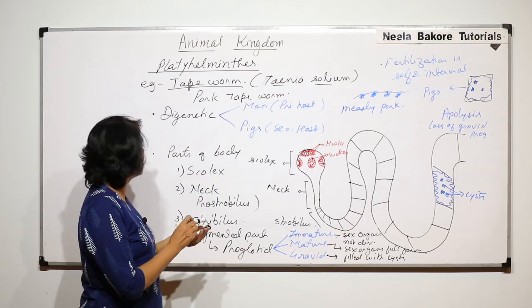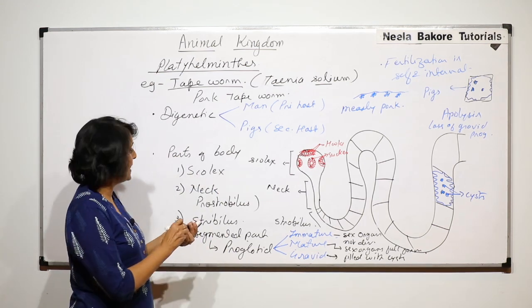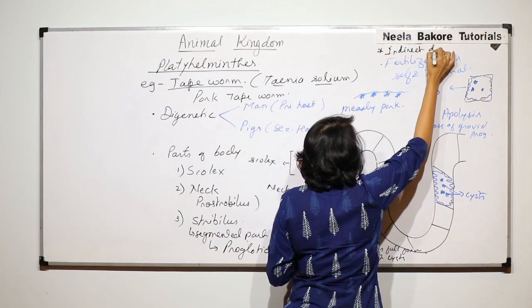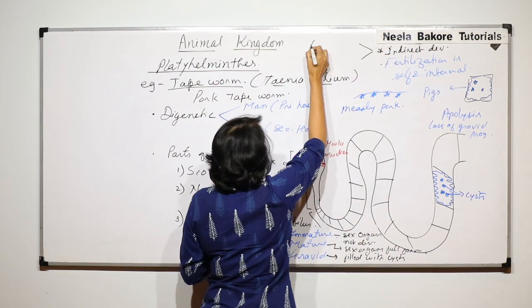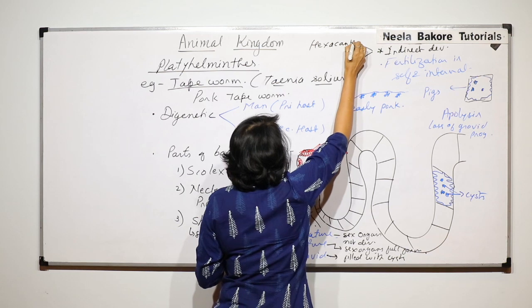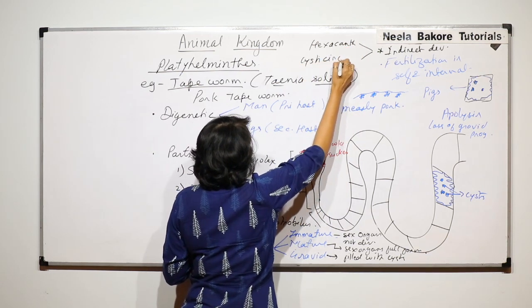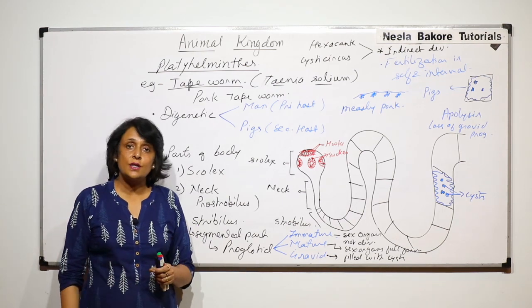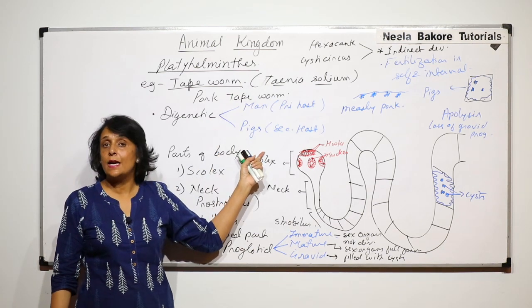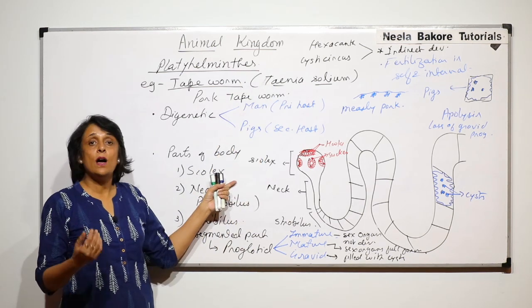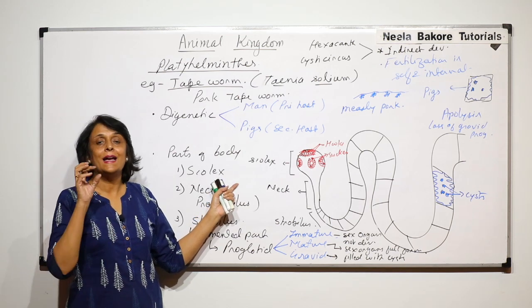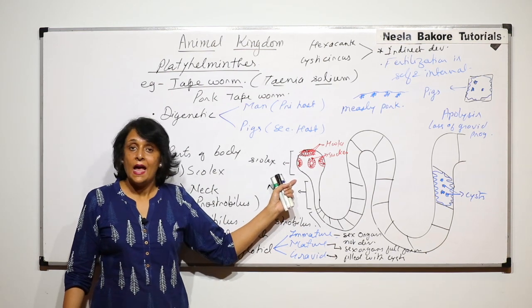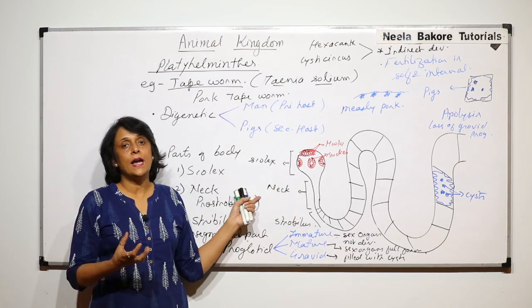Now there are two larval stages, that means the development is indirect. The larval stages are hexacanth and cysticercus larva. All these details of the larval structures are not in our syllabus, but there are larval stages, that means the development is indirect. And now when it comes back into our body, it again anchors itself to the wall of intestine and it keeps sucking the blood. And in the blood all the digested food is there that is absorbed by these worms.